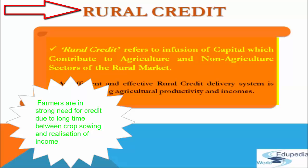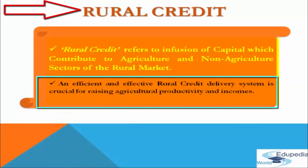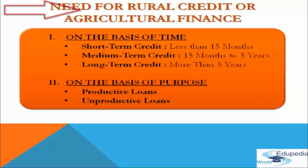Farmers borrow to meet initial investment on seeds, fertilizers, implements, and other family expenses such as marriage, death, and religious ceremonies. So we can say that credit is one of the important factors which contribute to agriculture production. An efficient and effective rural credit delivery system is crucial for raising agriculture productivity and incomes.